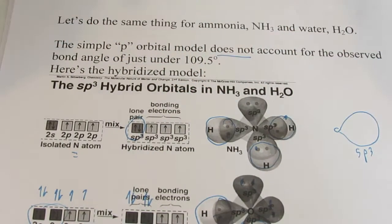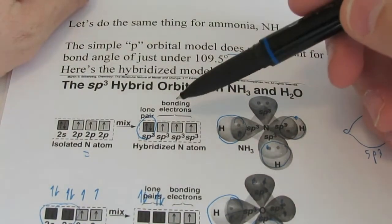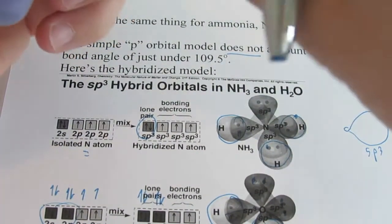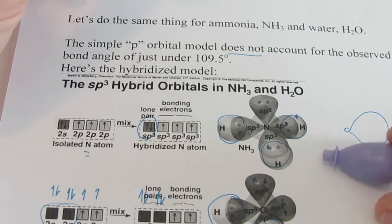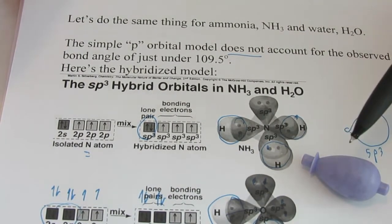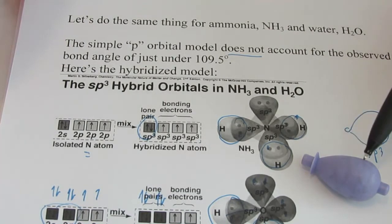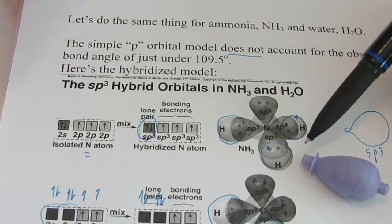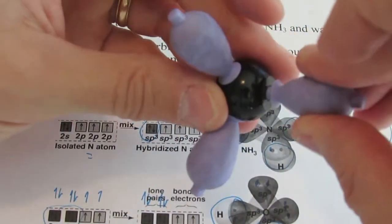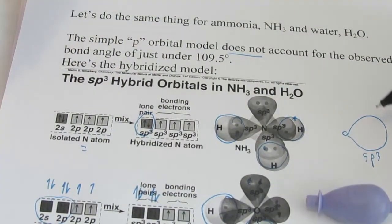We said when an S orbital blends with three P orbitals, we end up with a teardrop shape of orbital, and for my models, we're going to use that balloon-shaped orbital there. So this represents an electron in an SP hybrid orbital. This little knob at each end is just for me being able to create models, so you'll have to ignore those. It has this type of shape for an SP hybrid.